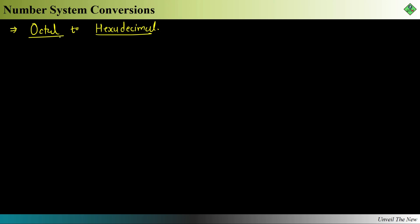Now coming back to the topic, let's do the conversion from octal to hexadecimal. The octal number we are going to take is 562.177. Here also we will follow the same path: first we will do octal to binary, and then from binary to hexadecimal, because this is the easiest way of conversion.